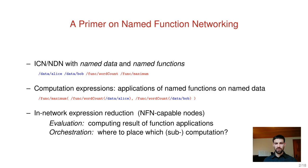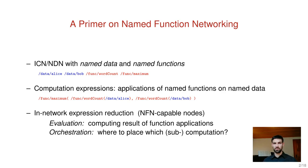An NFN is a named data network where not only named data is available but also named functions. Named functions are common NDN content objects which contain executable code. What applications in NFN do is compose computation expressions from data names and function names.